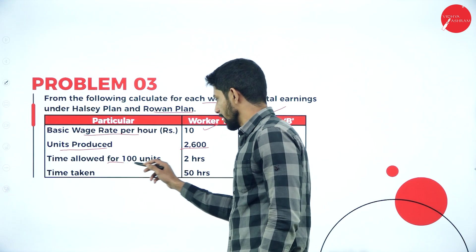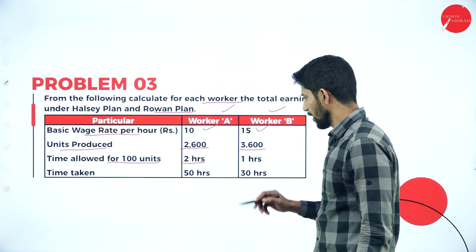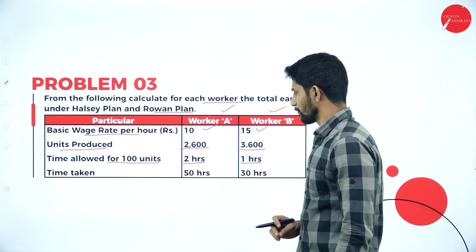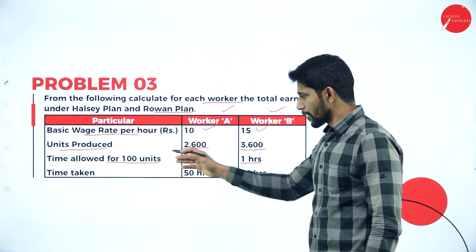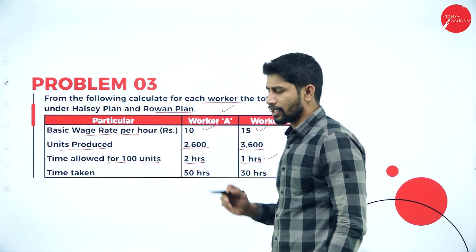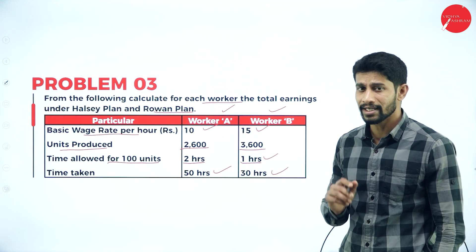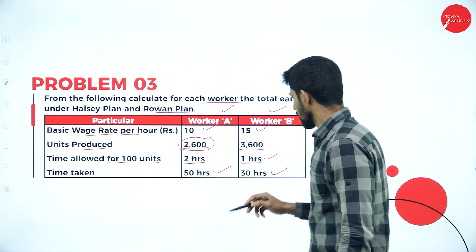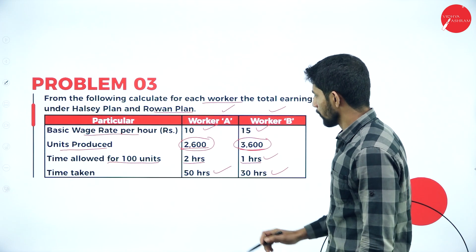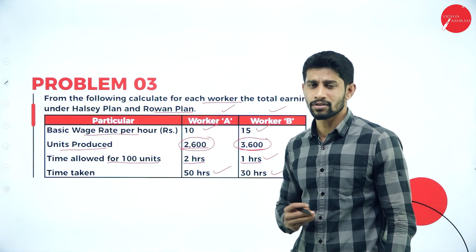Time allowed for 100 units — that is the standard time. The standard time given to produce 100 units is 2 hours for worker A and 1 hour for worker B. The actual time taken is 50 hours and 30 hours respectively. However, the standard time to produce 2600 units and 3600 units is not given — we are supposed to find it out, then only we can solve the problem.